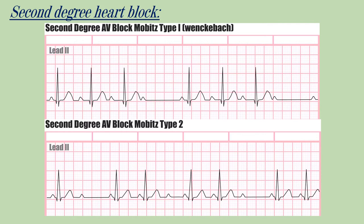In Mobitz type 2, the beats are conducted with a constant PR interval, but occasionally there is a P wave without a QRS. It usually has a ratio of 2:1, 3:1, or 4:1.